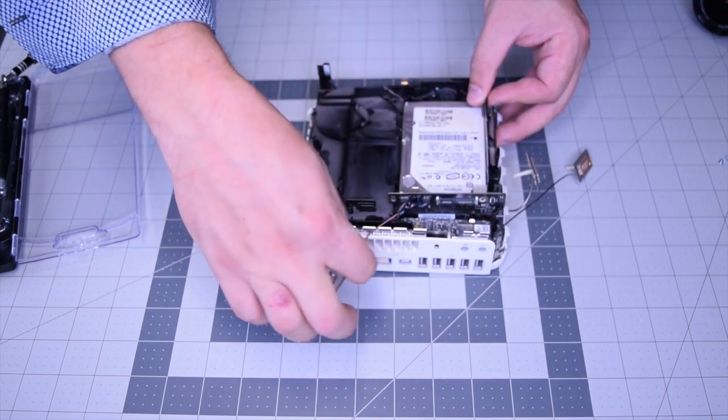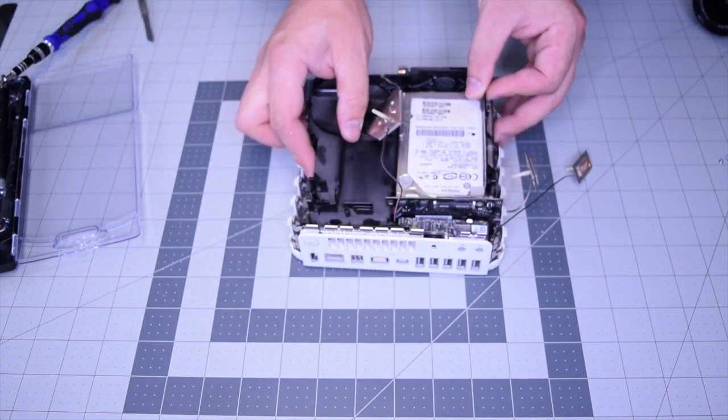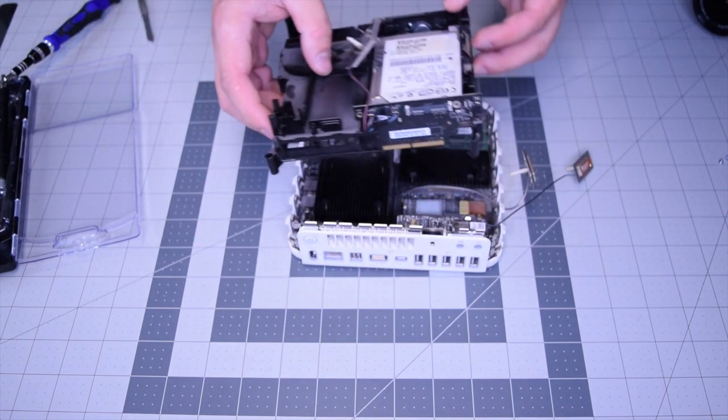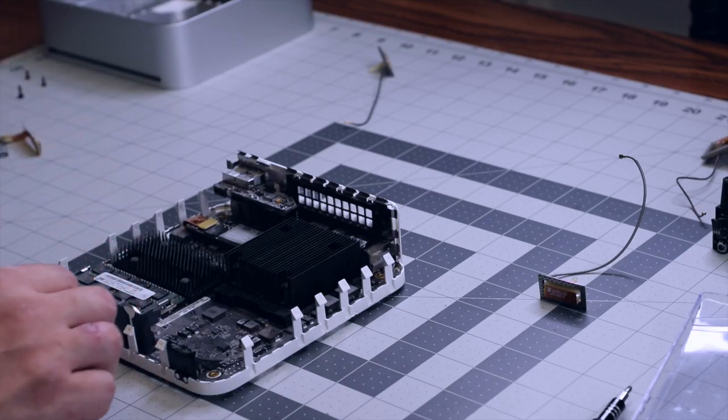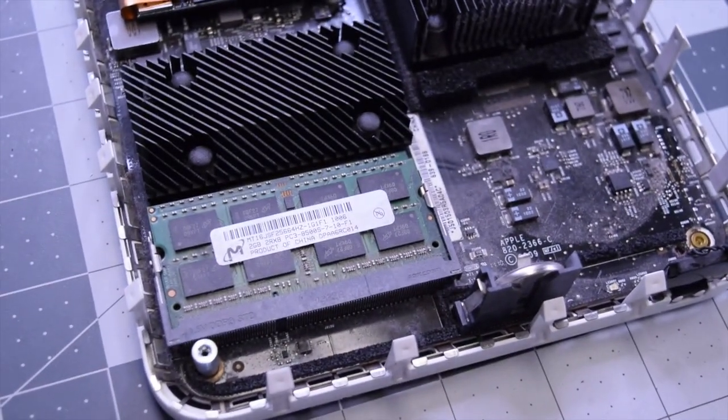One of the antennas might pop out, like this red one that I just moved. It popped out during the removal. The memory is here in the bottom left.